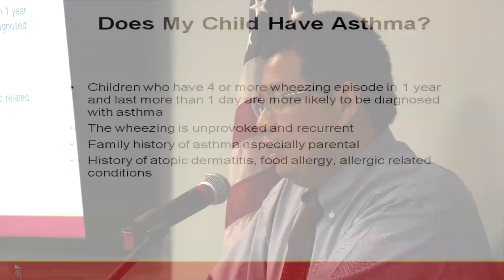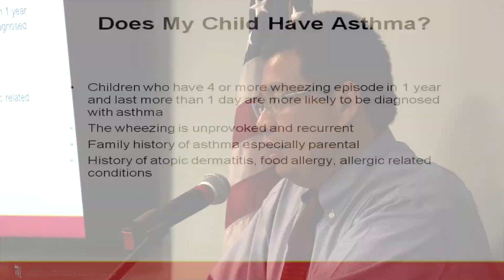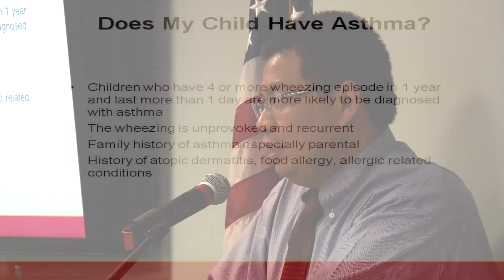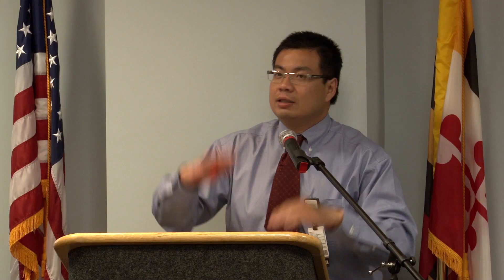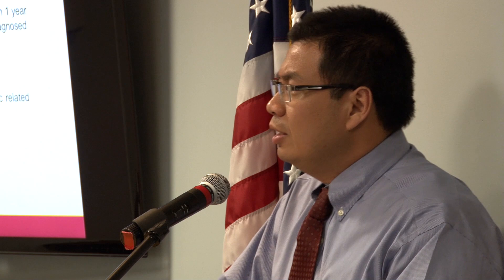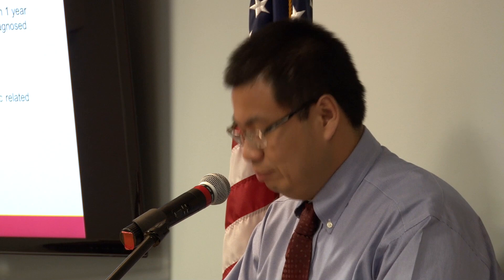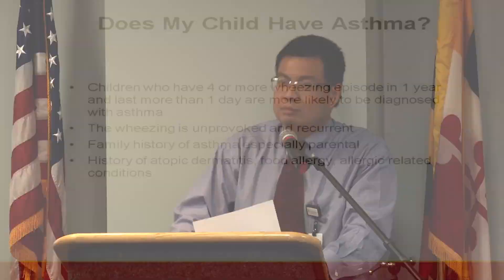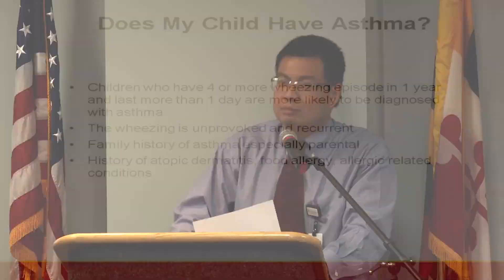Family history of asthma is important — you need to ask. It doesn't matter whose side of the family, you need to know. But if the child is adopted, genetic family history doesn't count. History of dermatitis, food allergy, and allergic-related conditions are very prominent and important factors to know.